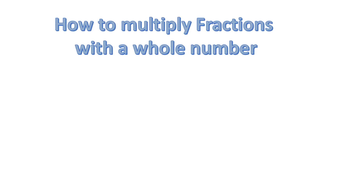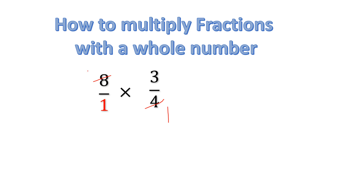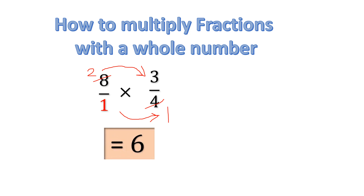How to multiply fractions with a whole number? We have the whole number 8 multiplied by 3 over 5. Whenever we see a whole number like 8, it is actually 8 over 1. The rules are the same: 8 is a numerator and 4 — wait, checking 8 and 5: no common factor. But 8 and... applying cancellation by 4: 4 times 1 is 4 and 4 times 2 is 8. In the numerator we multiply 2 with 3 to get 6. The denominator 1 times 1 is 1, which we ignore. The answer is 6.